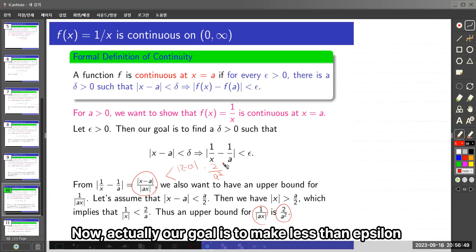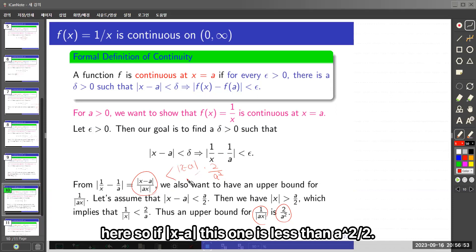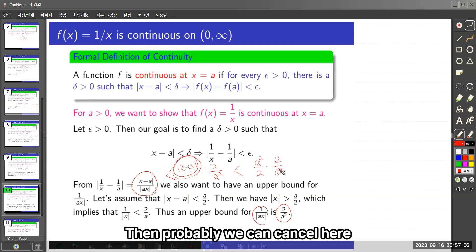Now, actually our goal is to make it less than epsilon. So if the absolute value of x - a is less than a²/2, then probably we can cancel in here. Then we need also epsilon in here.